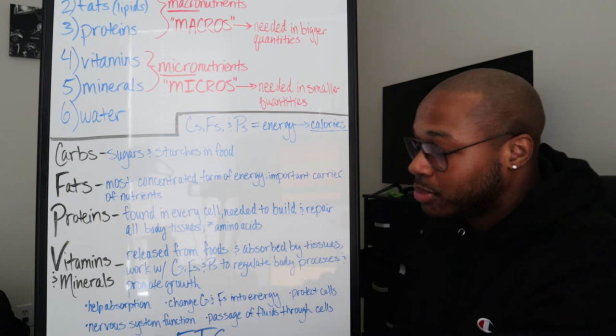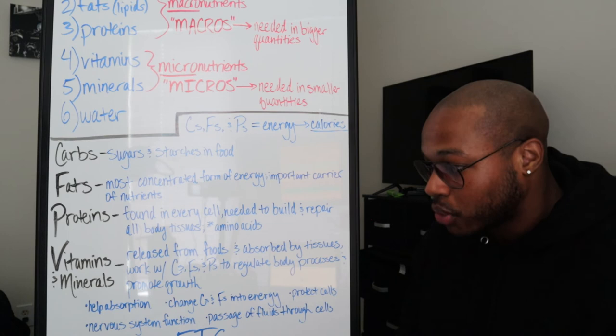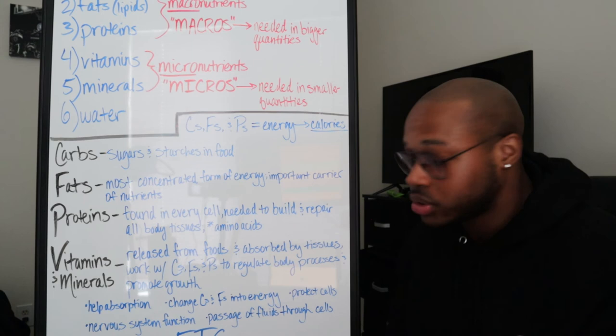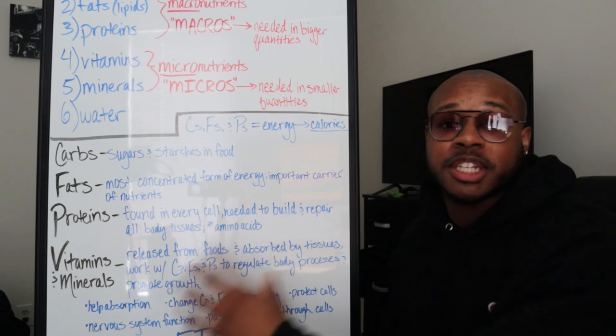Now some of those body processes - I just have a few listed here. They help with absorbing other nutrients, they change carbs and fats into energy, they help promote cell growth, they help with nervous system function, they help the passage of fluids through cells, and etc. Like I said, vitamins and minerals do much more than I'm explaining here.